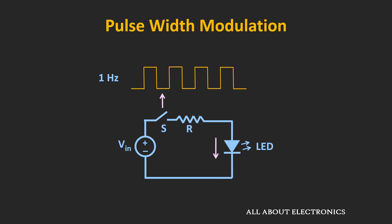If the switching frequency is 1Hz, you can see the flickering in the LED. But if the switching frequency is 500Hz, the switch will get turned ON and OFF very rapidly, and you feel like the LED is continuously in the ON condition. For a particular application, the switching frequency should be optimum. Depending upon the application, usually the switching frequency varies from hundreds of Hz to even kHz.